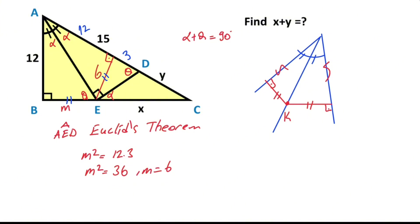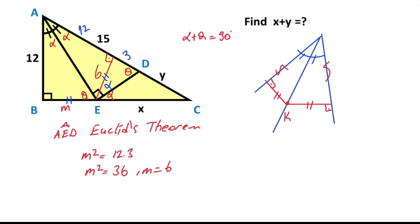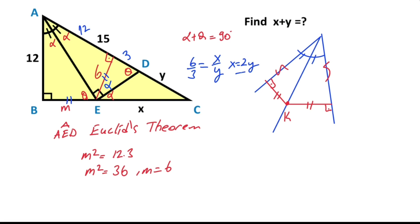So m equals 6. Then if you focus on this triangle, notice that if here is theta, this angle here must be equal alpha. Therefore we get one more angle bisector line. According to the angle bisector theorem, the ratio of 6 over 3 must be equal to x over y, that means x equals 2y.